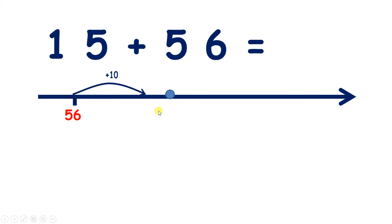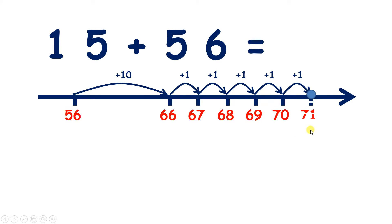So if I add 10, I get to 66. So I've added the one 10 in 15. Now I need to add five units. So if I count on five from 66, I get 67, 68, 69, 70, and 71. So I've added five units. So 15 plus 56 is 71.